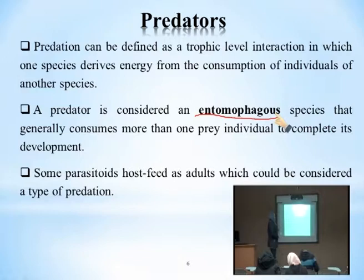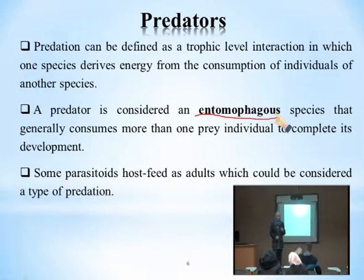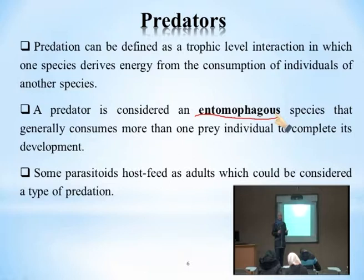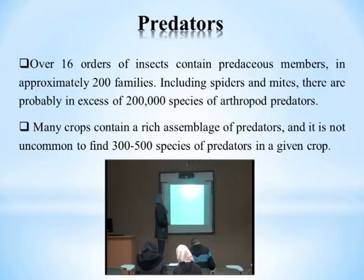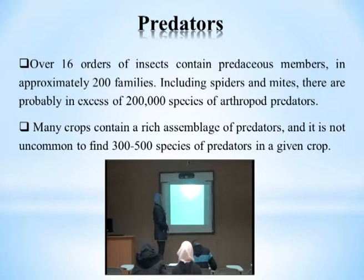In normal conditions most parasitoids do not feed on insects — they feed on plant by-products like nectar, pollen, and honeydew — sources that contain sugar or plant protein. However, in some cases, adult parasitoids feed on insects before laying eggs, and this is considered a type of predation.